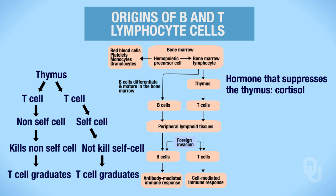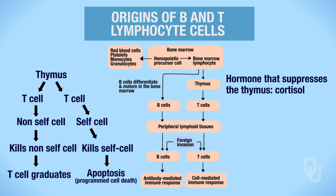But here's the issue: if the T cell is presented with a self-cell and kills it, that's a bad thing because you would have an autoimmune disease. Should that T cell be able to leave the thymus and enter the peripheral lymphoid tissues? The answer is no—you don't want a T cell circulating throughout your body killing self-cells. So what happens to that T cell? The T cell undergoes apoptosis—programmed cell death. That T cell commits suicide, and it should, because if it doesn't, you will have an autoimmune disease.